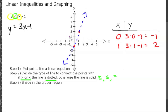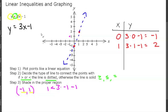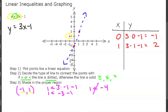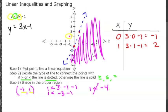Let's look at the test point (-1, 1). Our y is 1, so we check: 1 is less than 3 times negative 1 minus 1. That gives us 1 is less than negative 3 minus 1, which means 1 is less than negative 4. We know that 1 is not less than negative 4, so we shade in the opposite side because this point is not included in the inequality.